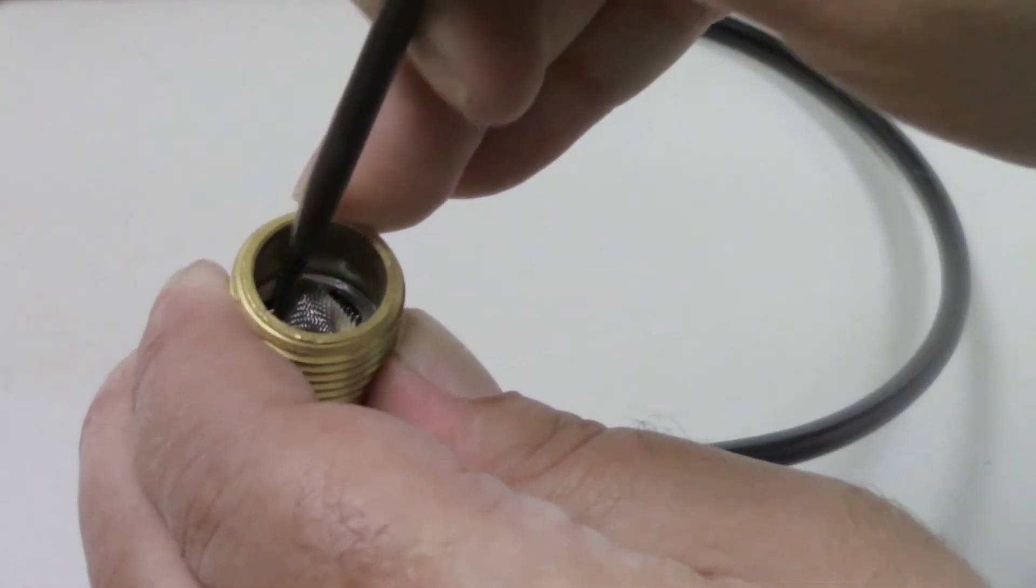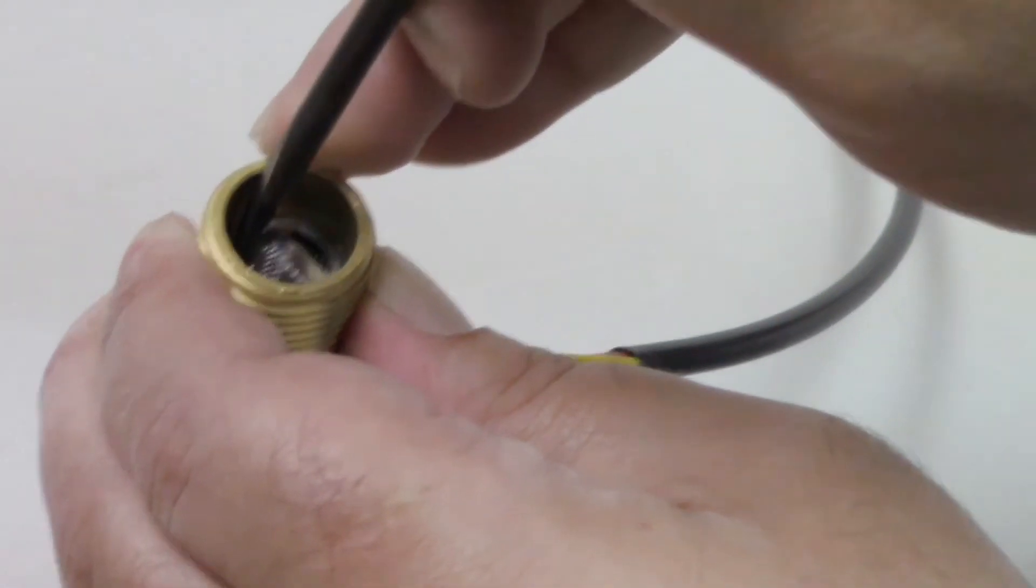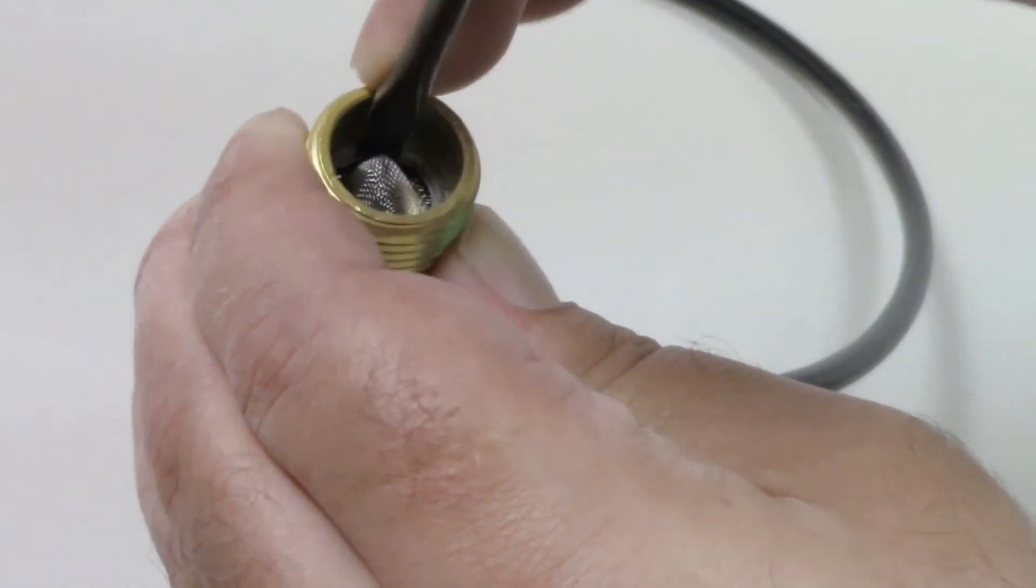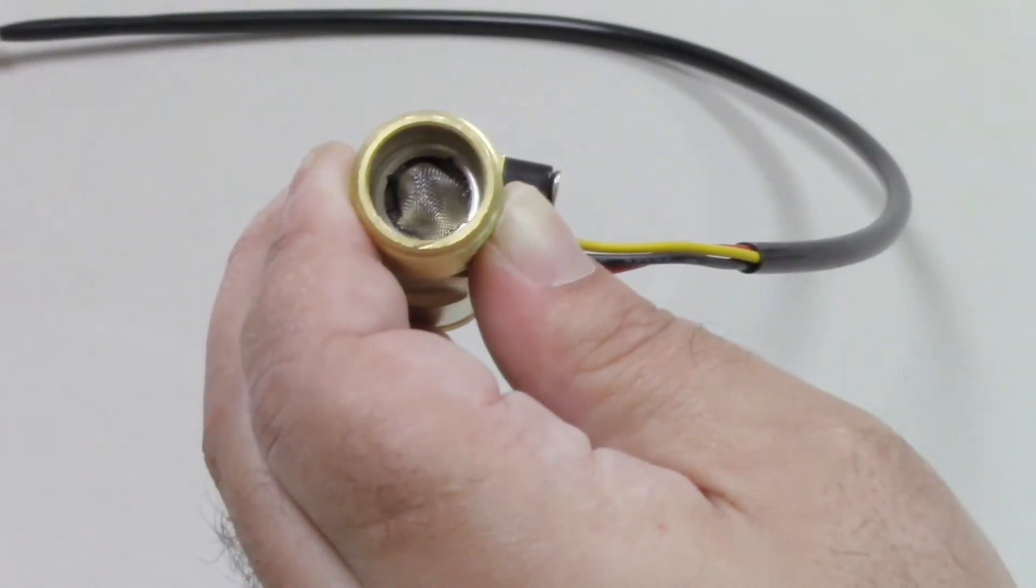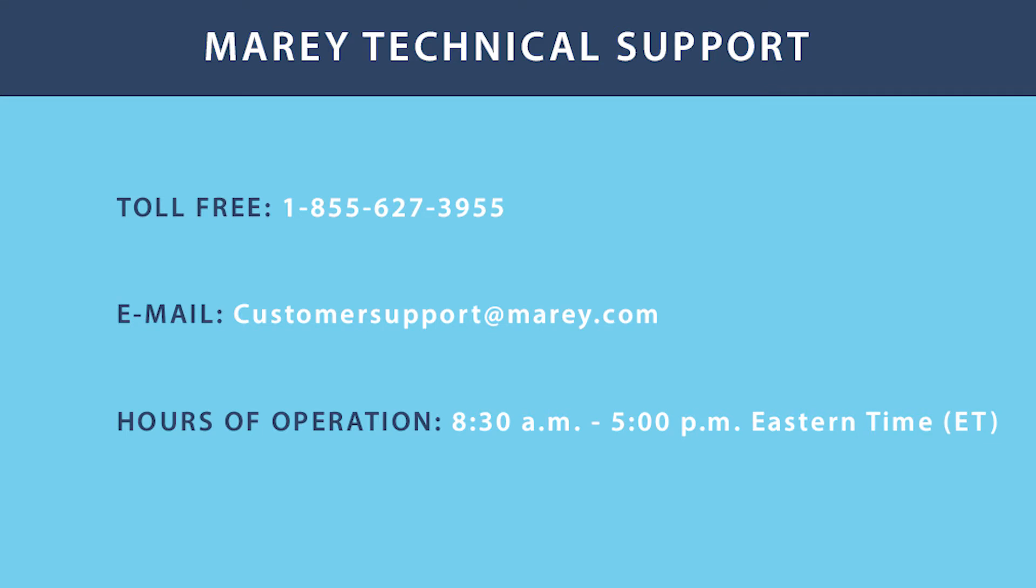If the flow switch spins freely and the problem continues to persist, then your unit's flow sensor may have malfunctioned and will need to be replaced. Please contact Mirate Technical Support for further assistance.